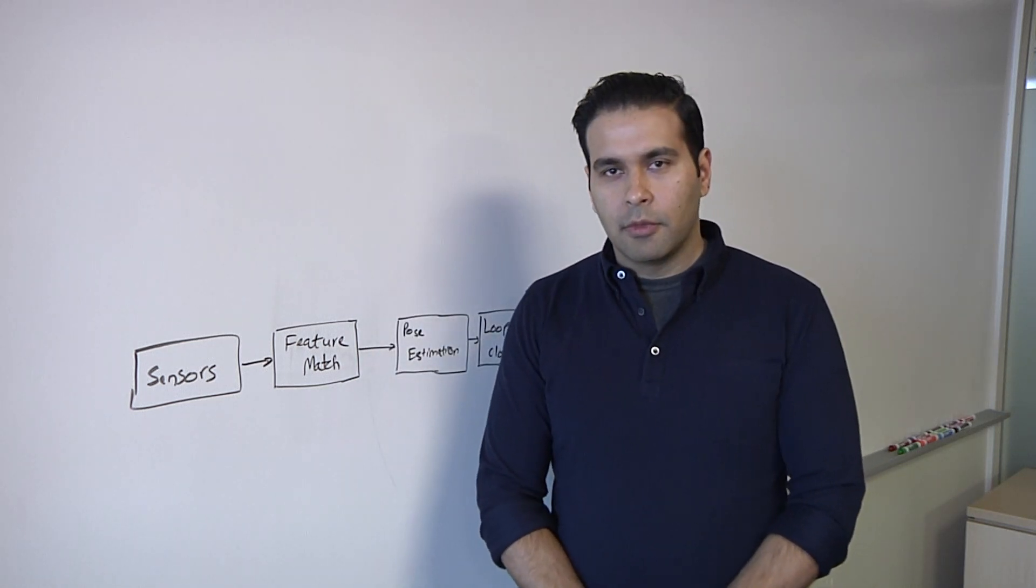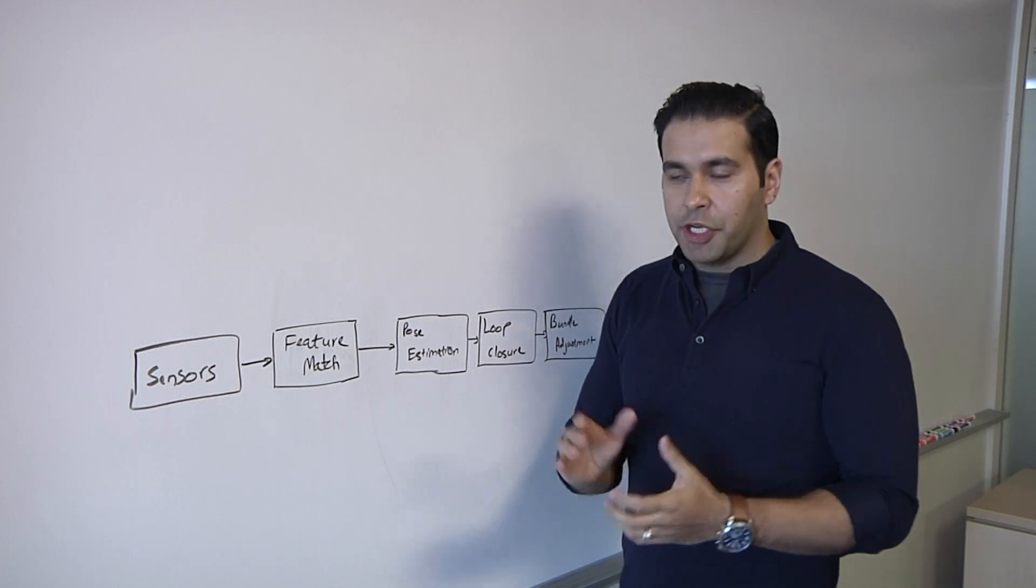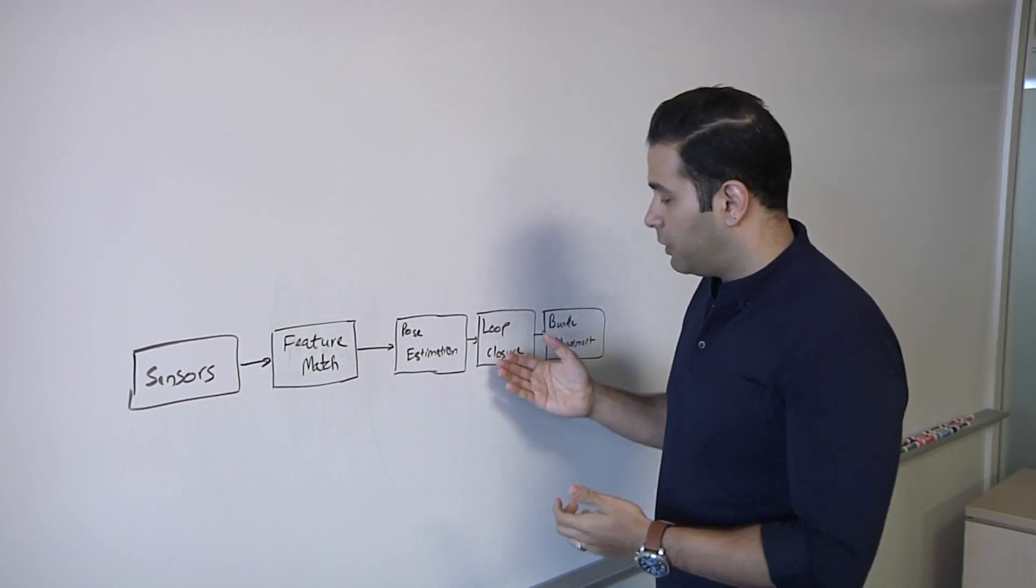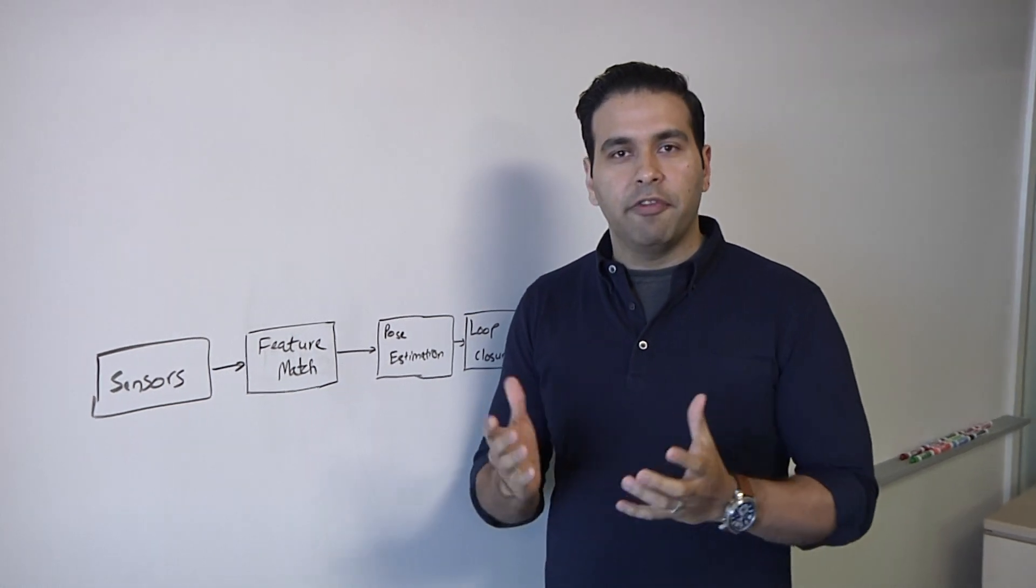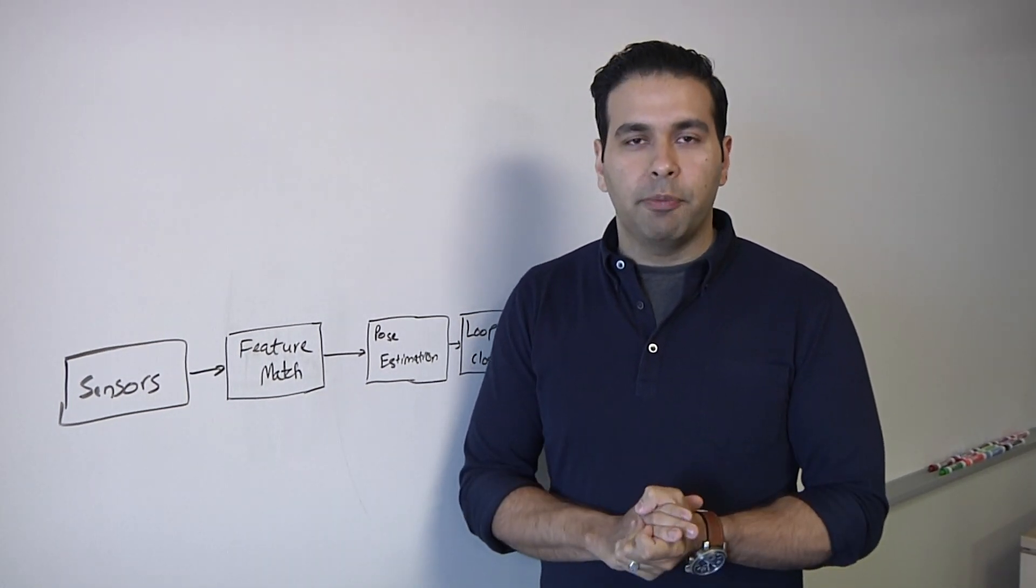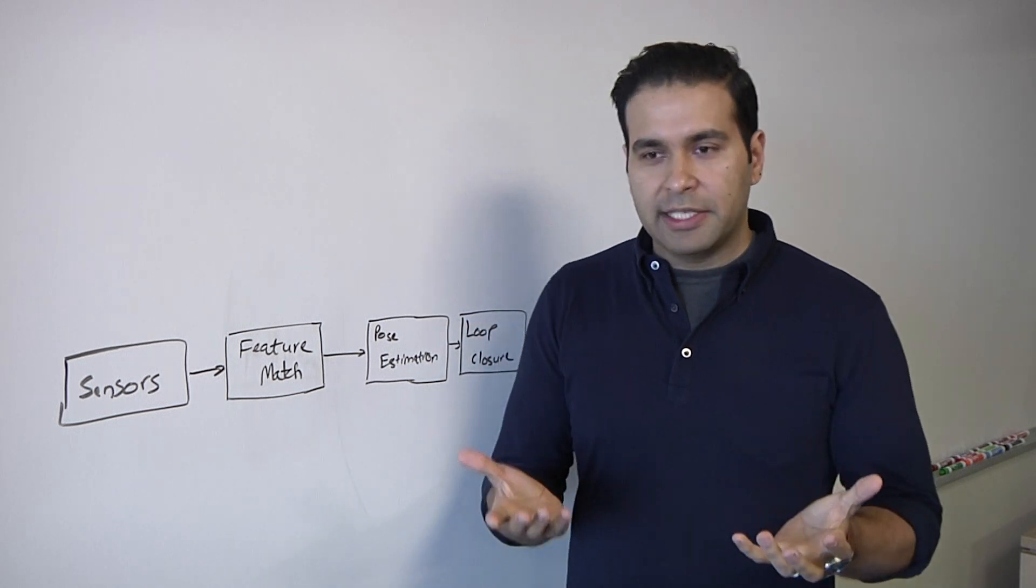So, what else is in the flow here? Okay. So, once you have a pose estimation, you have the next step, which is called loop closure. So, the goal of a loop closure is basically to identify that you have visited or you have been to that particular spot before.